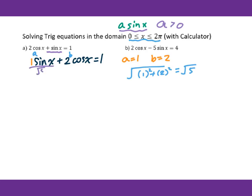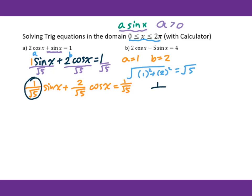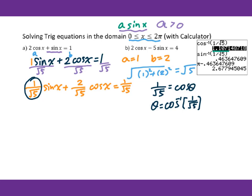Therefore I divide both sides of this equation by √5. Then we organize: (1/√5)sin(x) + (2/√5)cos(x) = 1/√5. Then we set up 1/√5 = cosθ, and put into the calculator: θ = inverse cosine of 1/√5. We get the answer θ = 1.107. So we will get sin(x + 1.107).